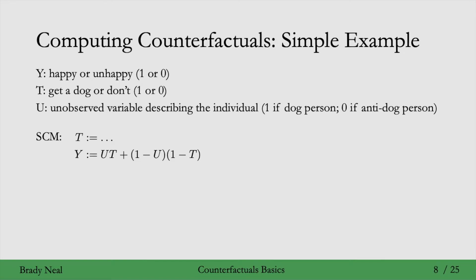In this example there are two different types of people, described using u, the unobserved variable. The first type is a dog person, u equals 1, and the second type is an anti-dog person, u equals 0. Here's the corresponding structural causal model. We don't need a structural equation for t because it can be whatever — people can decide whether or not to get a dog based on whatever. The structural equation for y is what's important. If they're a dog person (u equals 1), their happiness is just equal to the treatment: get a dog and they're happy, don't get a dog and they're not. If they're not a dog person (u equals 0), this term cancels out and their happiness is the opposite of the treatment — don't get a dog and they're happy, get a dog and they're unhappy.